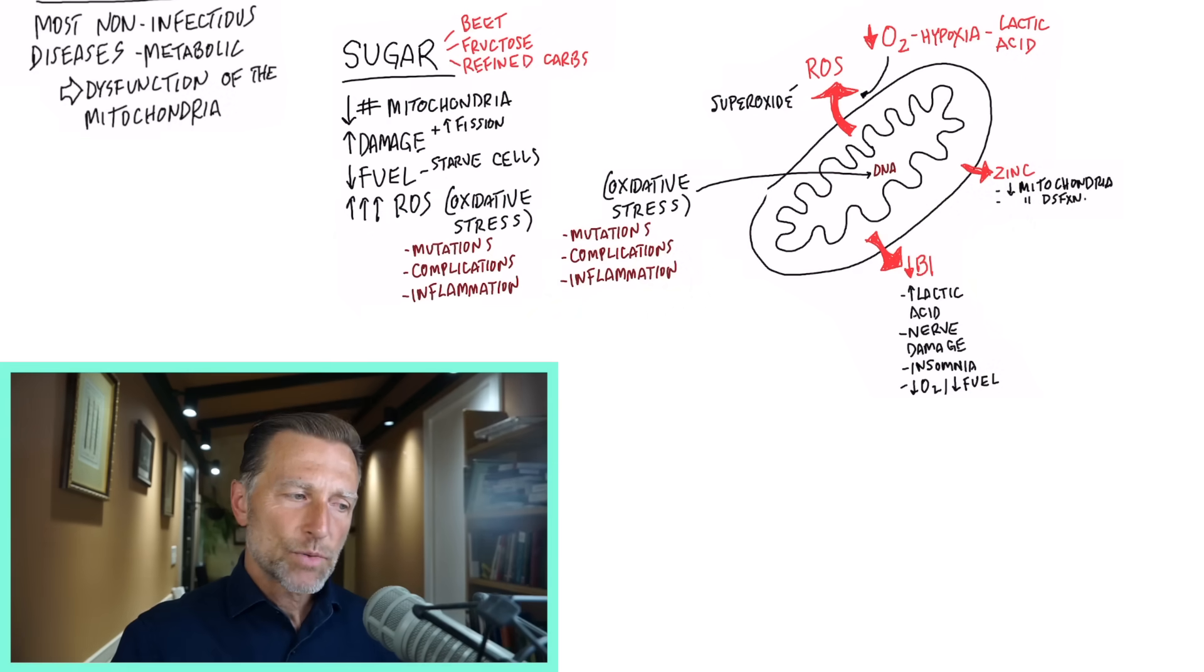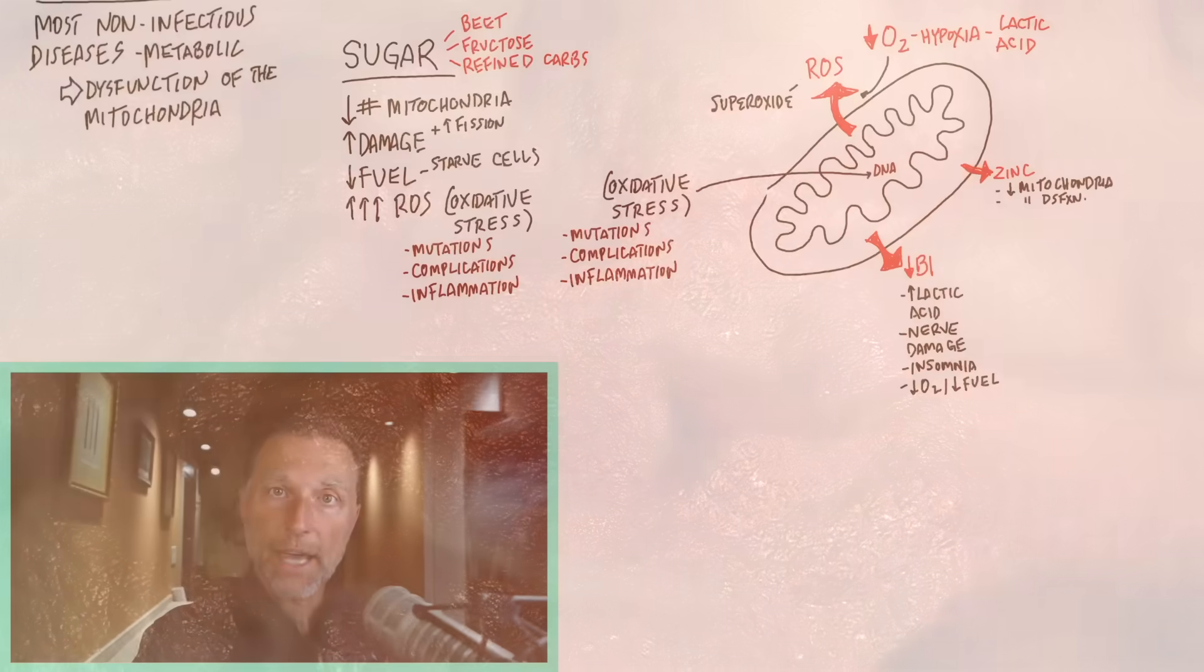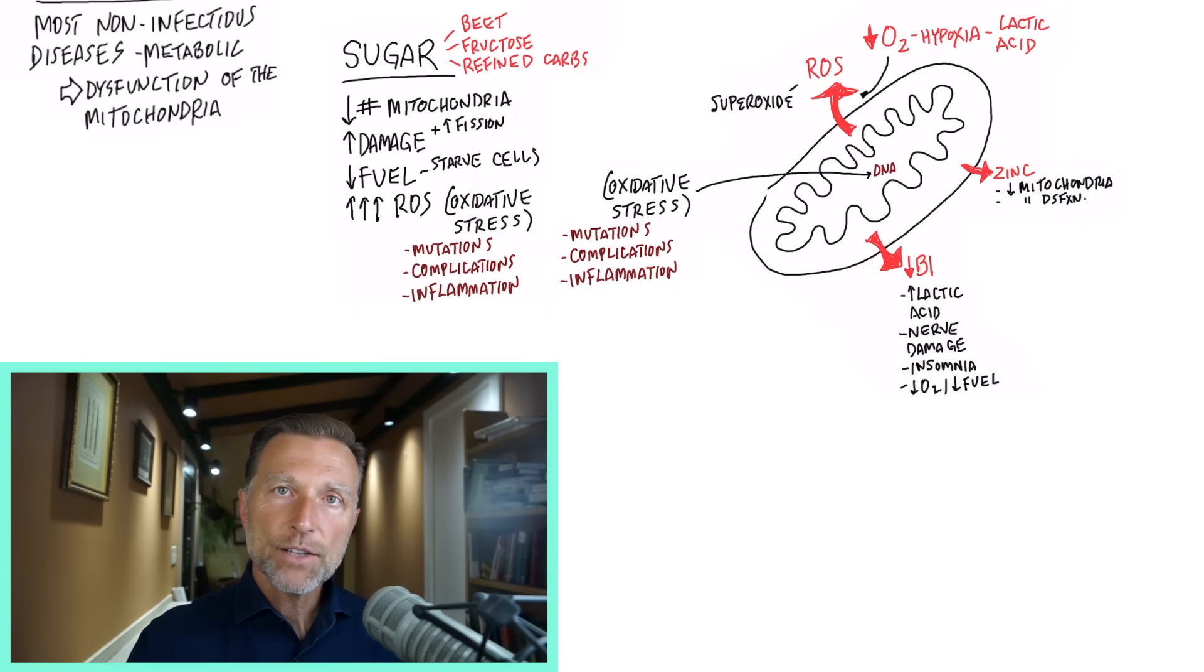There's something else that's really interesting that happens when you consume sugar. You get a decrease in what's called mitophagy. There's a condition called autophagy, which is the recycling of old damaged cells. And that's a good thing because your body goes into the state where it can clean up damaged mitochondria and replace them with new mitochondria. But sugar inhibits that ability for your body to recycle mitochondria.